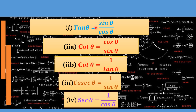Note something here: tangent is sine over cosine, and cotangent is cosine over sine. So we can say the cotangent is the reciprocal of the tangent — you can see the flip of the numerator and denominator. Therefore, cotangent can also be written as 1 over tan.